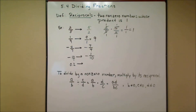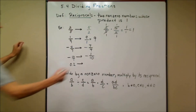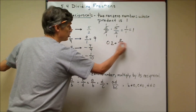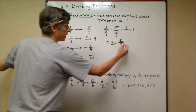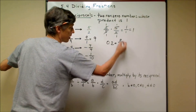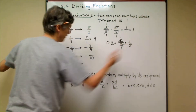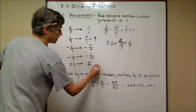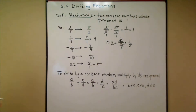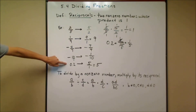For a decimal like 0.2, we know 0.2 is the same as 2/10, which simplifies to 1/5, so the reciprocal would be 5/1 or just 5. To find a reciprocal, flip the fraction — make the numerator the denominator and the denominator the numerator. If it's not written as a fraction, like those last two examples, write them as fractions first and then invert.